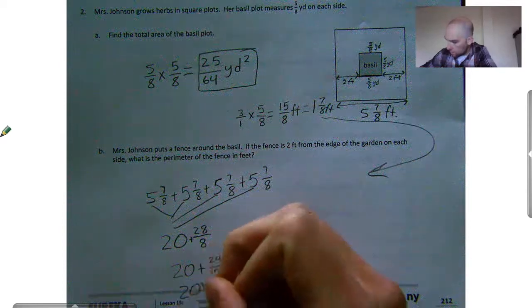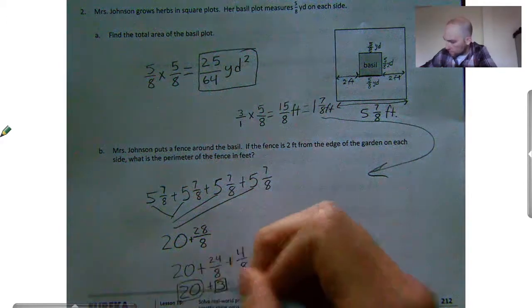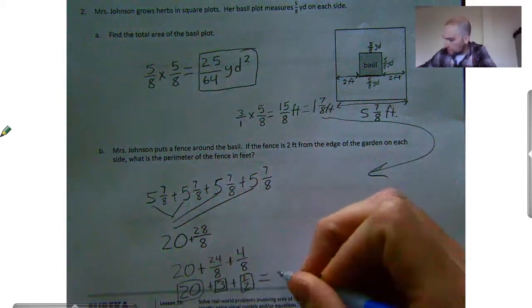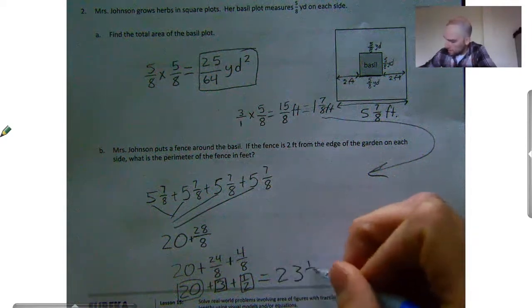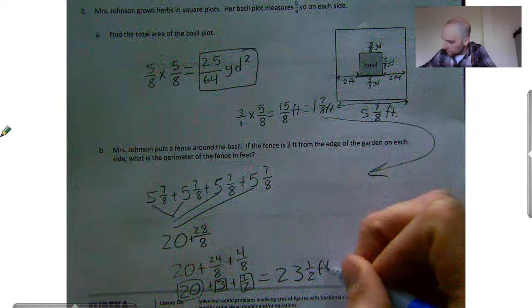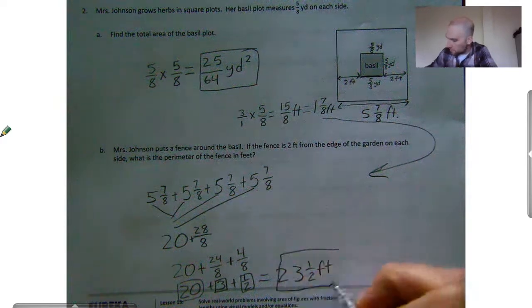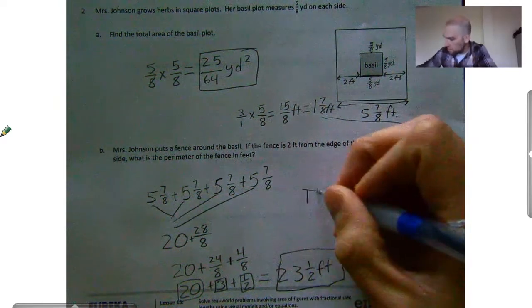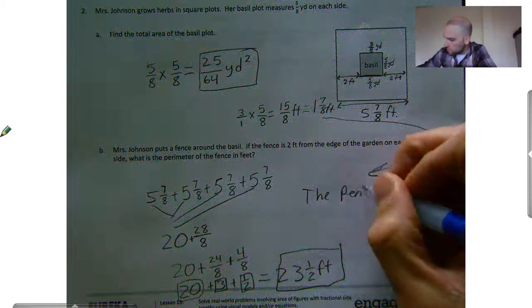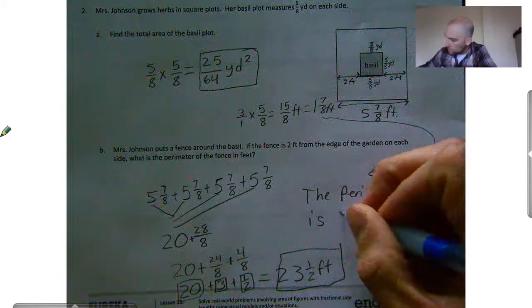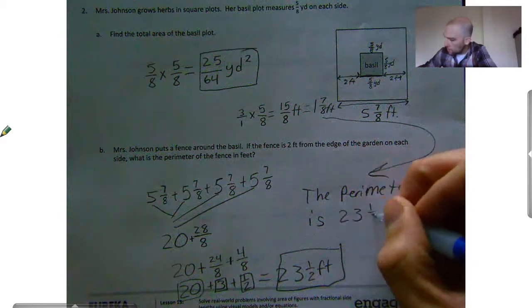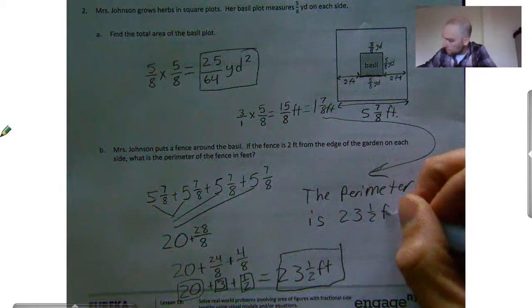And I have 20 here. So I have 20 plus three plus one-half is going to give me 23-and-a-half feet with my perimeter. So, the perimeter is 23-and-a-half feet.